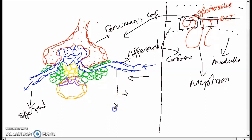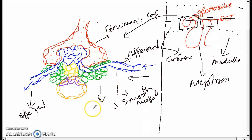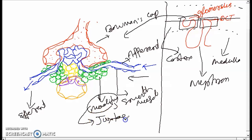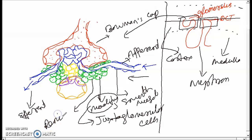This afferent part is normally made up of smooth muscles. Most of the smooth muscles present are modified into a special cell called juxtaglomerular cells. These green-colored juxtaglomerular cells contain an enzyme called renin — the most important enzyme — which is present here.